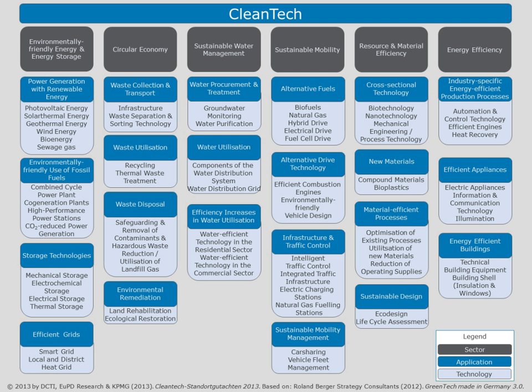Renewable energy is the energy that can be replenished easily. For years we have been using sources such as wood, sun, water, etc. for means of producing energy. Energy that can be produced by natural objects like wood, sun, wind, etc. is considered to be renewable.